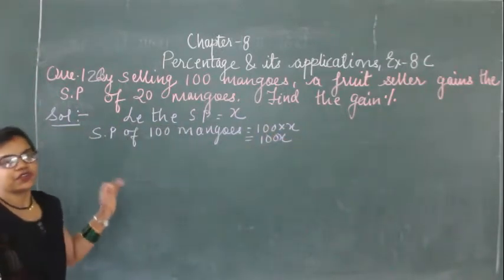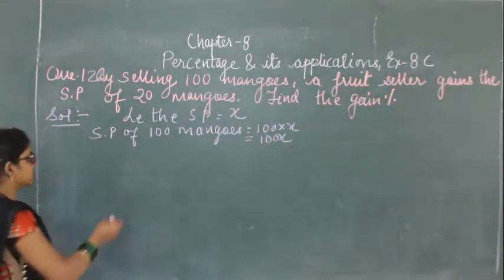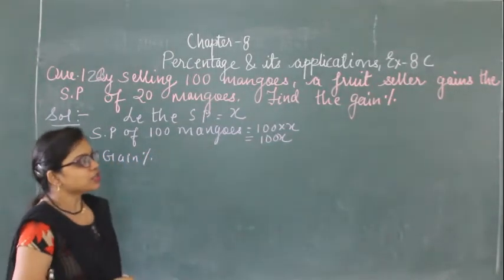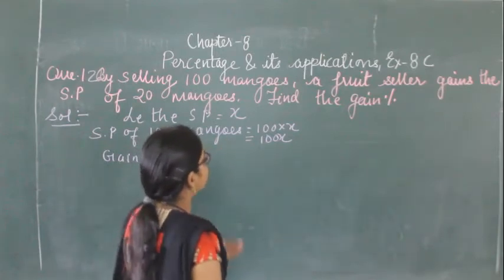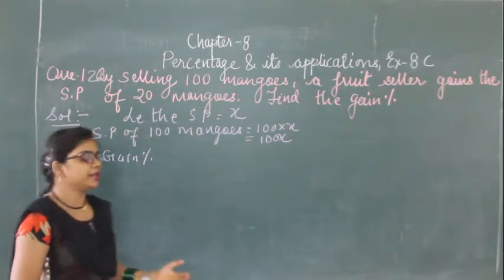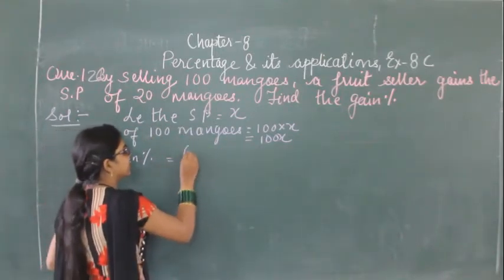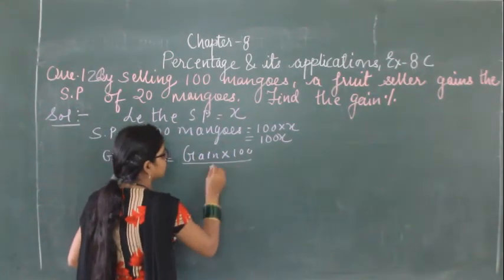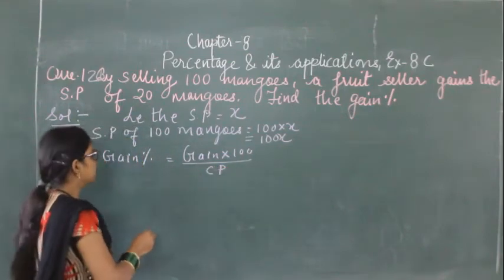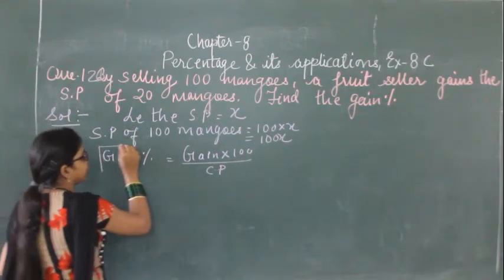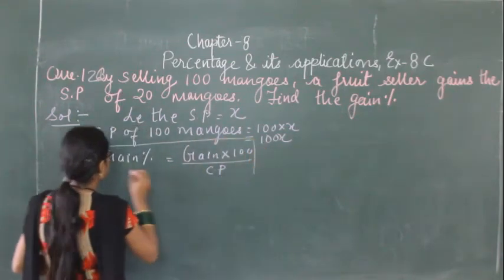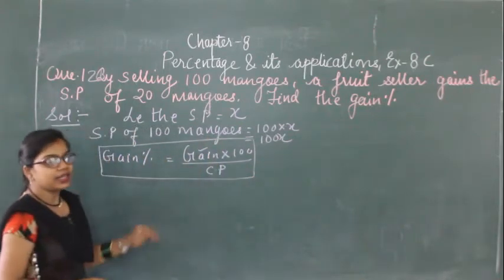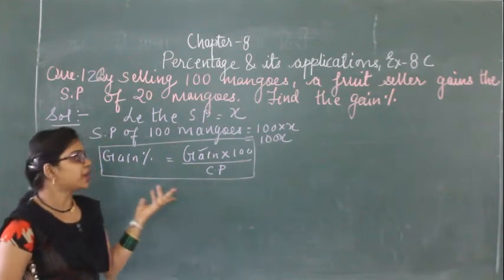We have to find the gain percent. The formula for gain percent is: gain into 100 upon cost price. For this, we first need to find the gain, and then the cost price.